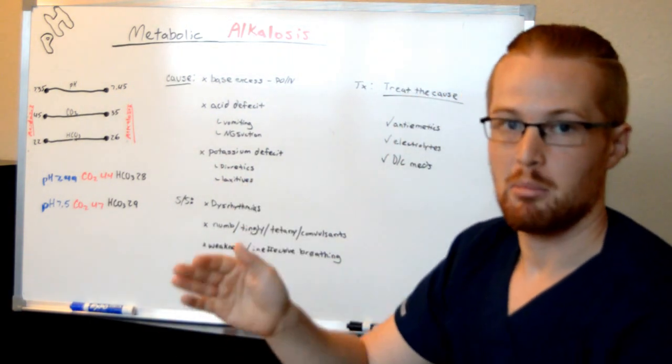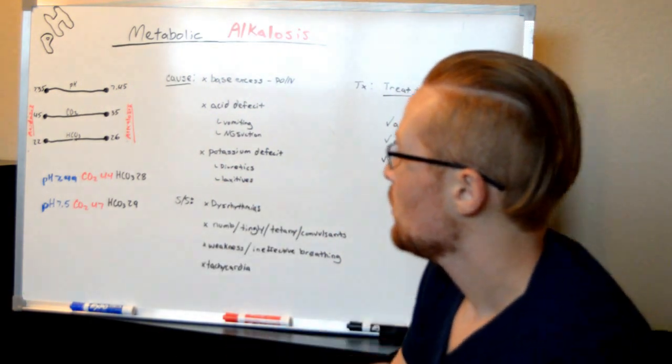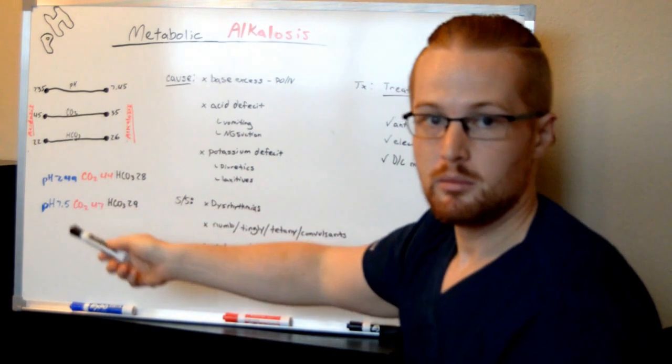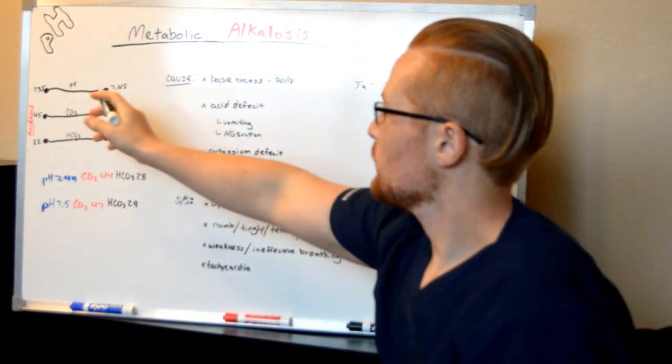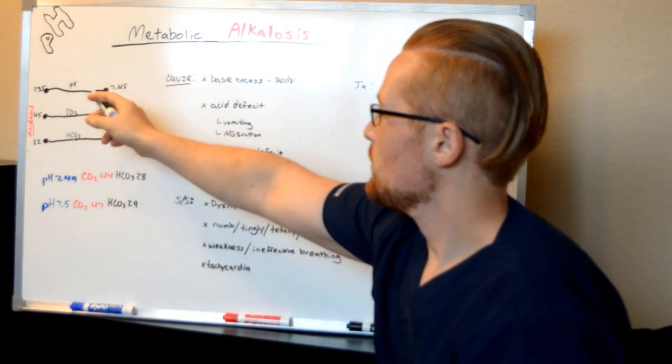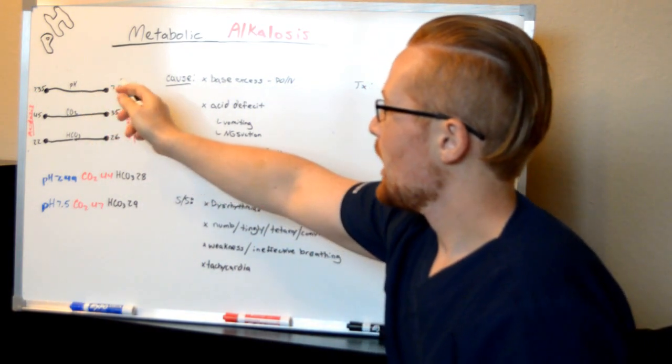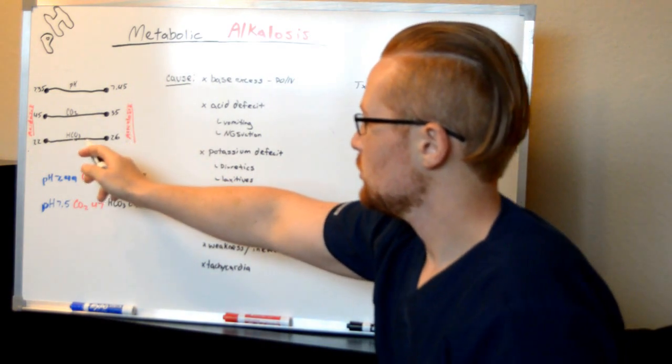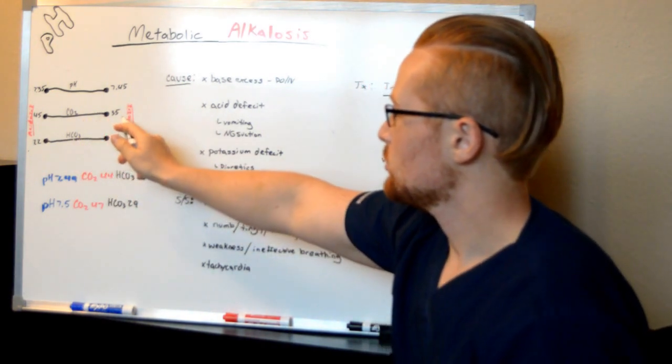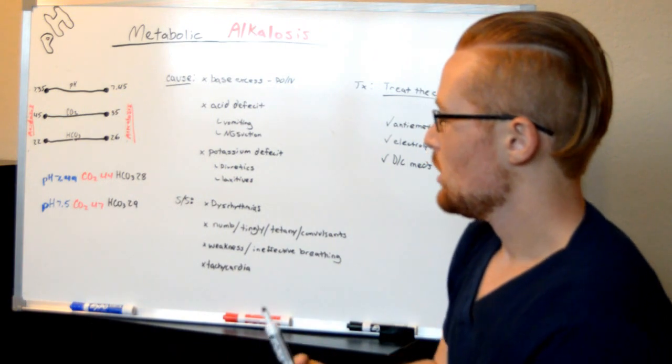So how can you tell it's metabolic alkalosis? I have a whole video explaining this in more detail, but we'll do two examples. You want to look at the patient's pH, and a high pH would be considered alkalosis. Other signs would be high bicarb or low CO2 levels. Let's do two examples.